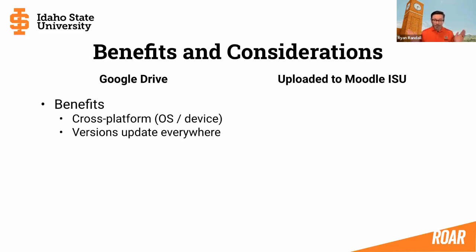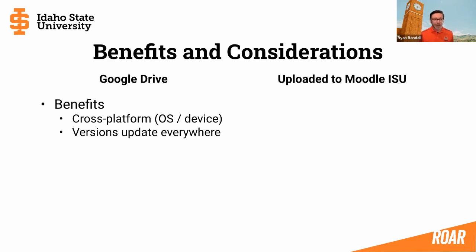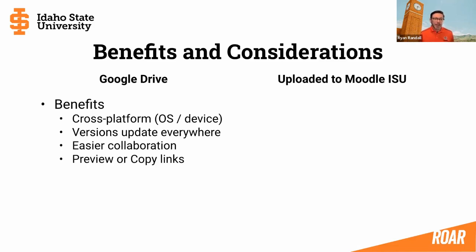Versions will update everywhere. Wherever you, as faculty, make changes, or wherever students make changes on their versions of a file, it will update everywhere. You don't have to worry about the 'final copy, really final copy' file naming conundrum. You'll also have easier collaboration among students, faculty, or whoever you share the file with. There's also a useful trick with preview or copy links that will be demonstrated on the next slide.